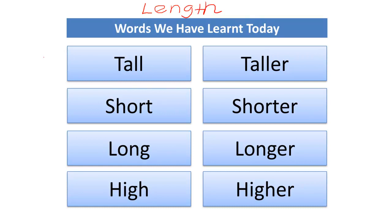Let's start with the first set of words. We learned the word tall and taller. If I have a picture of a man here, I would say he is quite tall — drawing a line up to his head. But if I have another taller man next to him, drawing a line all the way up, this guy is definitely taller compared to the one on the left.